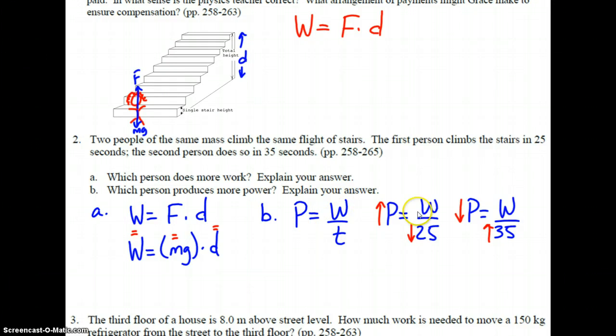Well, in this problem, we've already established that both people have done the same amount of work. However, one does it in 25 seconds. The other one does it in 35 seconds. You can see that the relationship between time and power is an inverse relationship. So the person that produces more power, the greater power, is going to be the one with the lesser time. Because they've done the same amount of work in less time, which would require more power. The person who's done it in a greater amount of time has produced less power because of the inverse relationship between time and power.